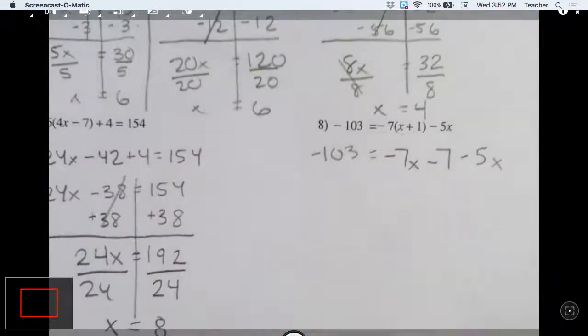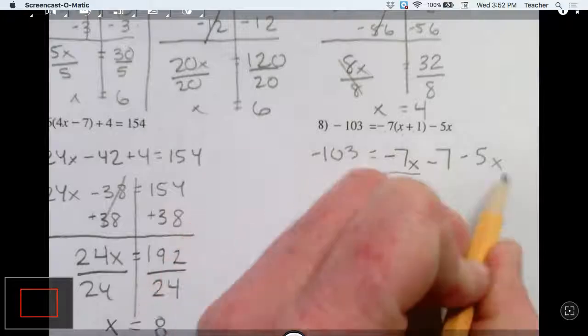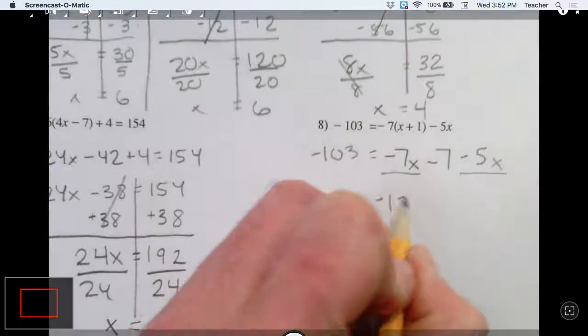I need to combine like terms. I have negative 7x and negative 5x. That's negative 12x.